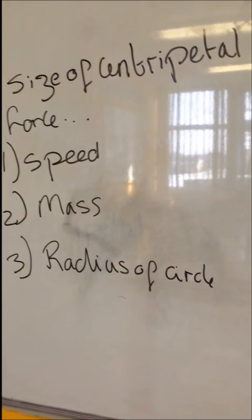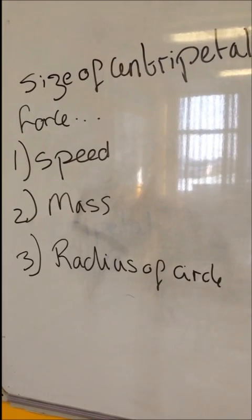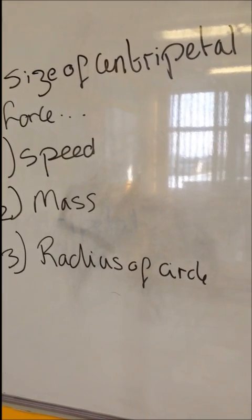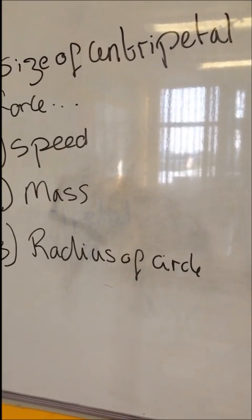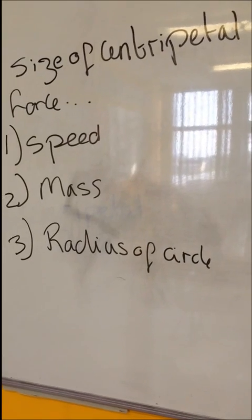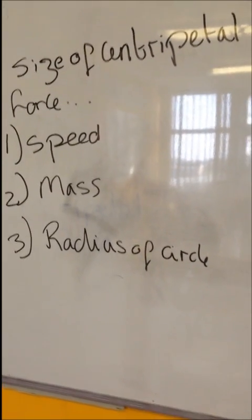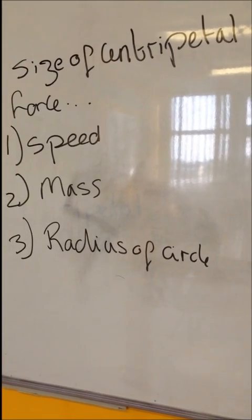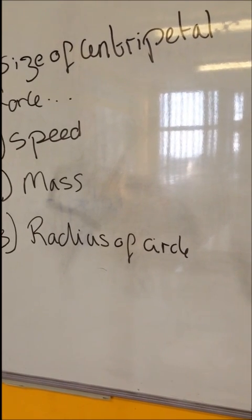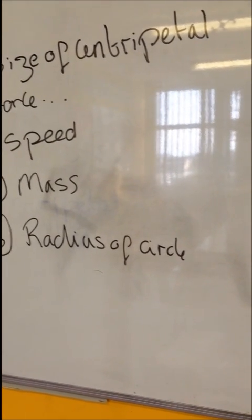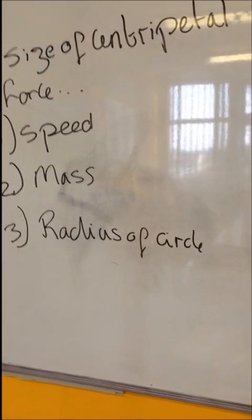Okay, so the size of the centripetal force, like I said at the beginning of this video, depends on three things. The speed at which something is turning, the mass and the radius of the circle. So, speed. If something is moving faster, you're going to need a bigger centripetal force to keep it going in a circle. If something has a larger mass, you're going to need a bigger centripetal force to keep it moving in a circle. And if your radius of your circle is smaller, you are going to need a bigger force to keep it moving in a circle.